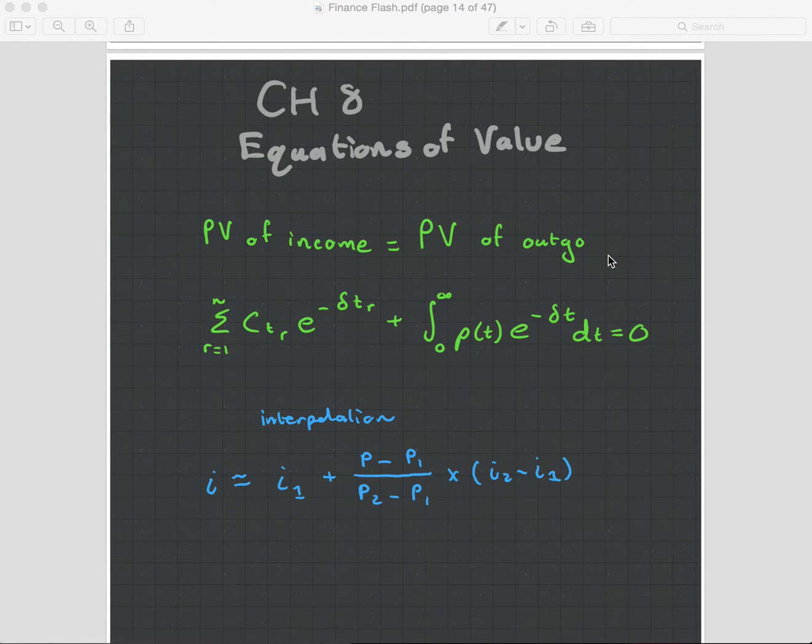Now, how does that work? How does the present value of the income equal the present value of the outgo? If a project costs a million dollars to start off, and then makes $100,000 every year going forward for infinity, how do they equal? Well, the present value of them will equal.